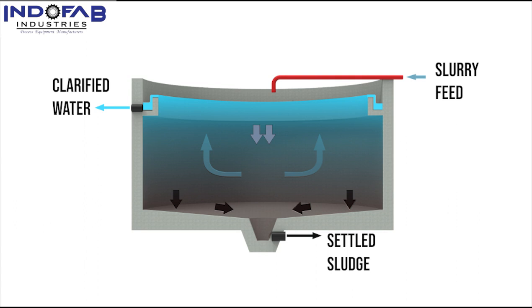Because of this quiescent condition, the solid particles settle to the bottom of the tank. The settled sludge is then sucked out of the sludge pit for further processing. The clear liquid naturally rises to the water level and is collected through the peripheral launder.